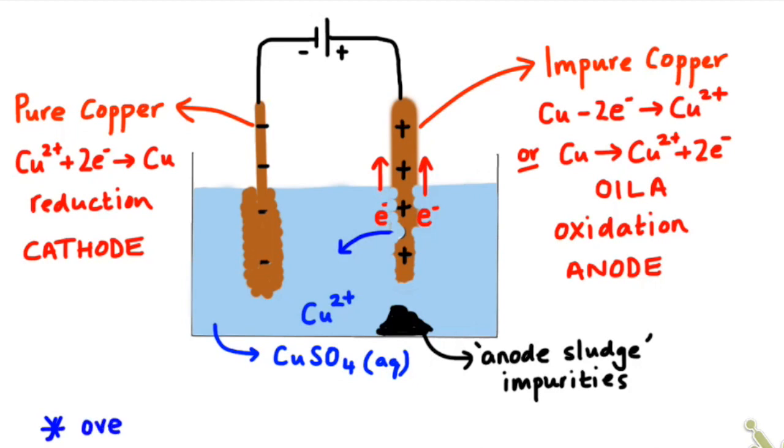Now, for every single atom of copper that comes off the impure copper electrode and goes into solution, there's a Cu2+ ion. Another Cu2+ ion comes out of solution as a copper atom on the pure copper electrode. So overall, we should see a constant concentration of Cu2+ ions in solution.